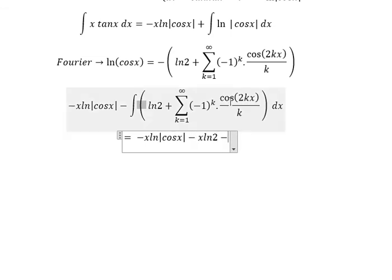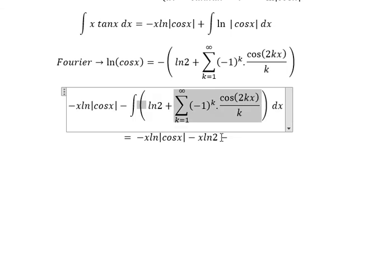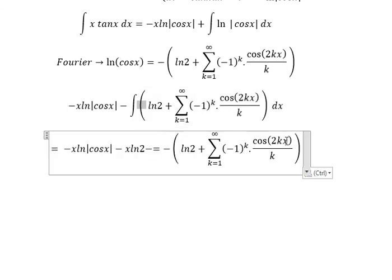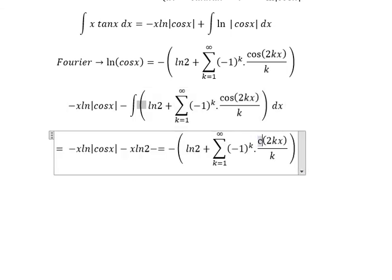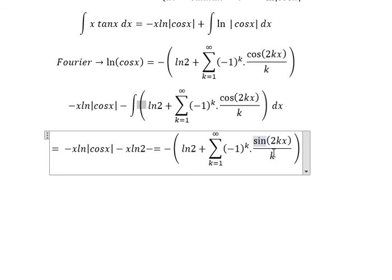The integral of cosine 2kx gives 1 over 2k multiplied with sine 2kx. So we have 2k in here, and we change to sine.